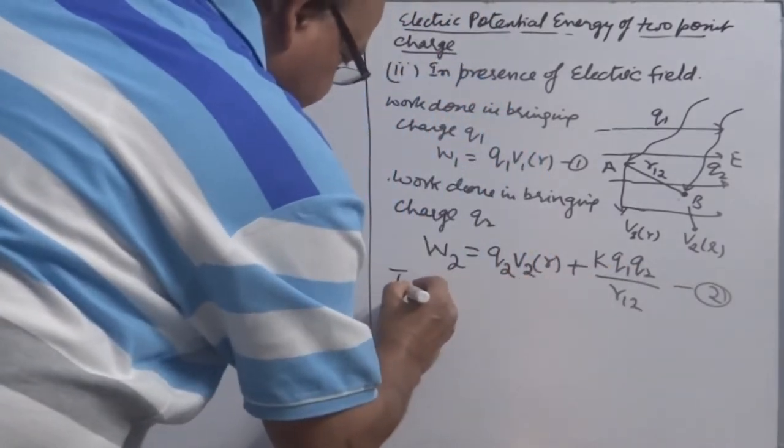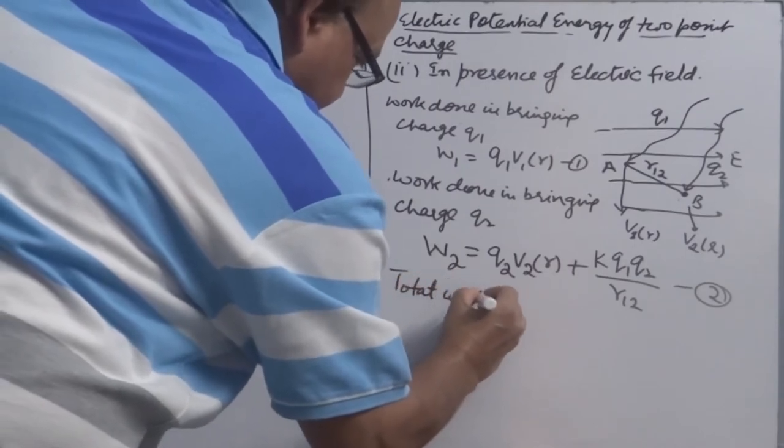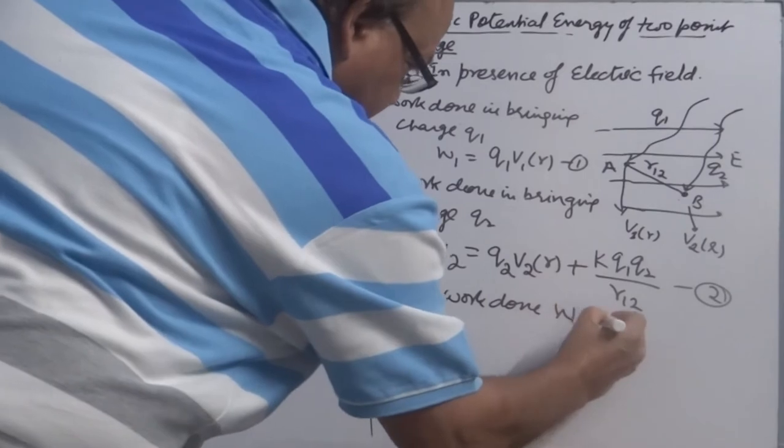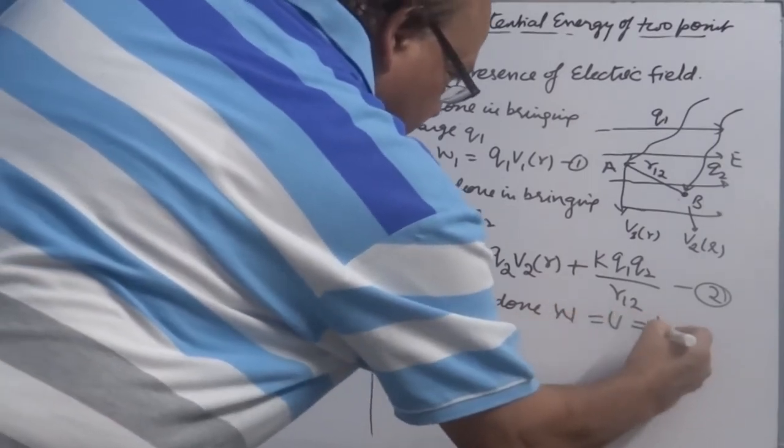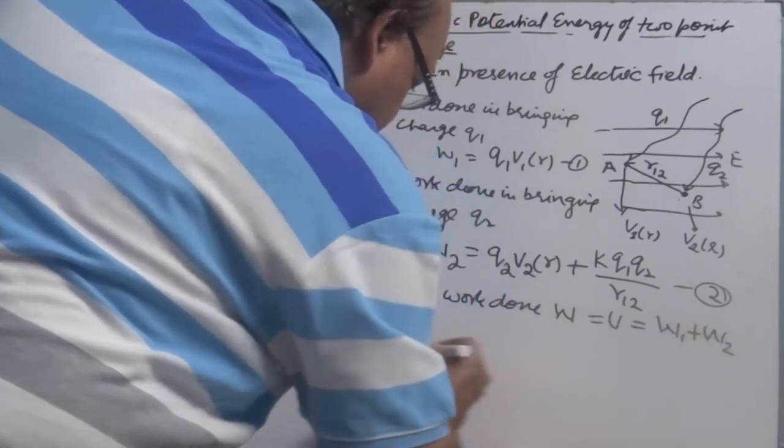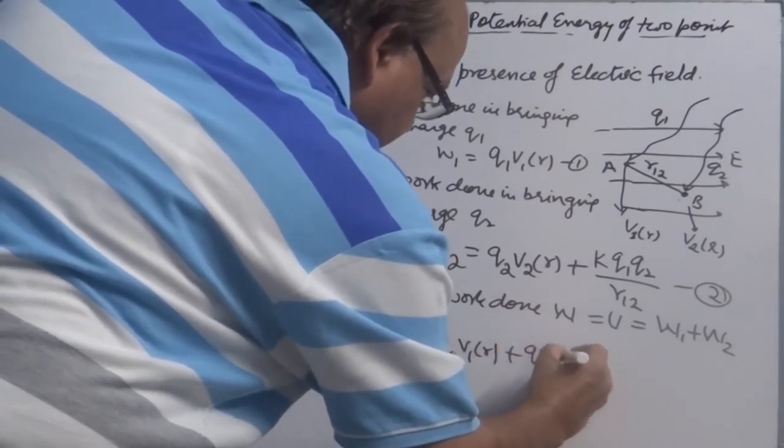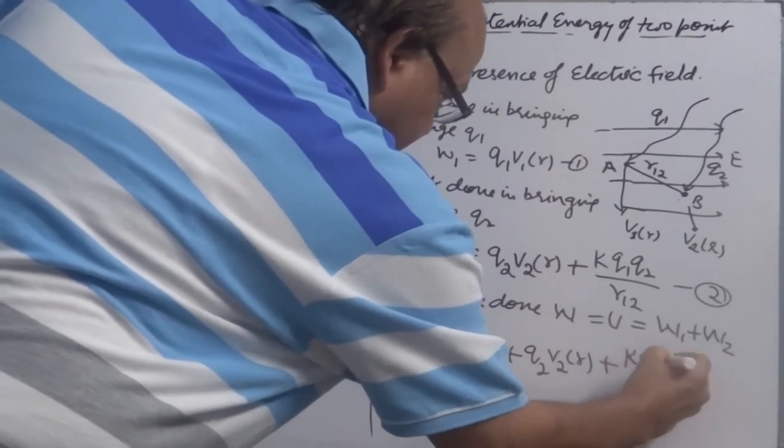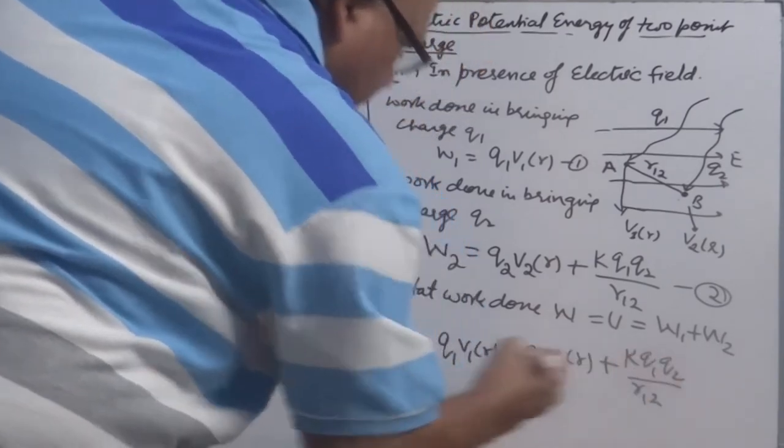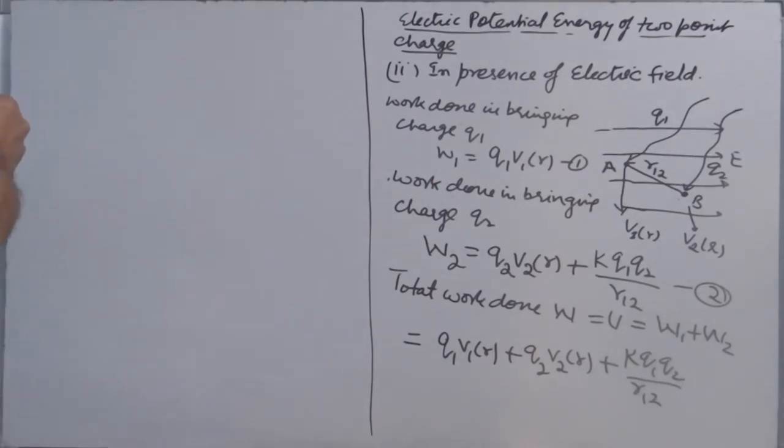What is total work done? Total work done, that comes out as electrical potential energy, is equal to W1 plus W2. That is Q1 V1R plus Q2 V2R plus K Q1 Q2 over R12. First, we have worked against potential of point A. Then while bringing charge Q2, we have to work against two potentials: potential developed by charge Q1 and potential at point B.